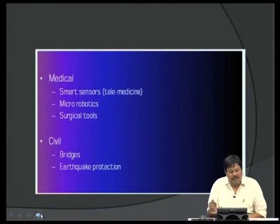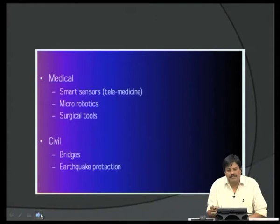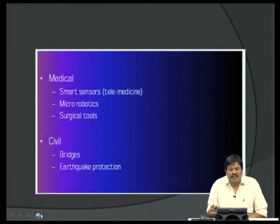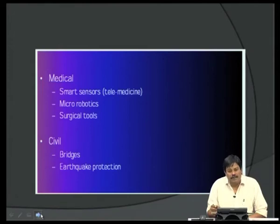Smart systems are extensively used in the medical field for micro robotics, surgical tools, and micro surgical tools. Micro needles are also notable. Pressure sensors are used for blood pressure monitoring and many other medical applications. In civil engineering, smart systems are needed for monitoring bridges. Many bridges are old and must be assessed for structural integrity, requiring structural health monitoring techniques for both existing and new bridges, as well as monitoring for hazardous conditions such as earthquakes and tsunamis.